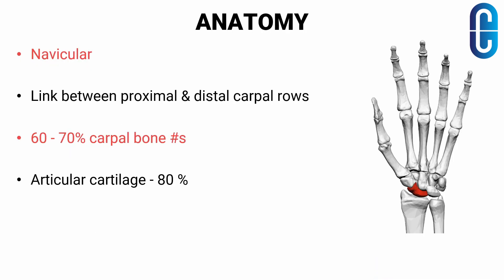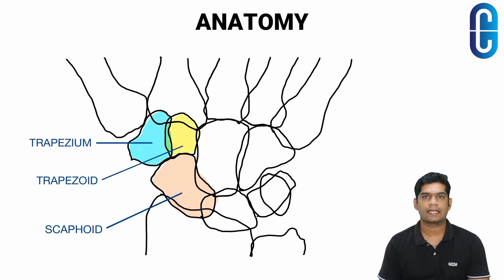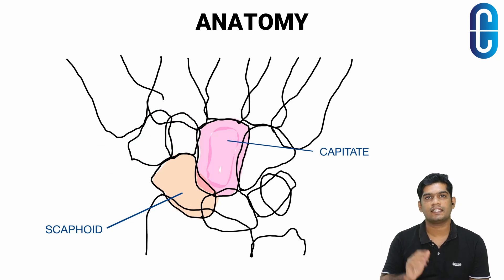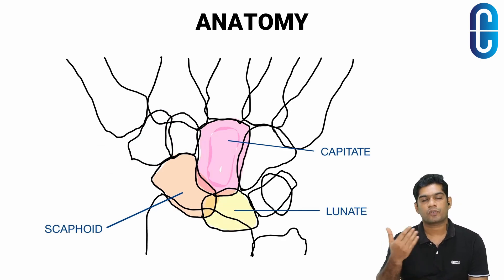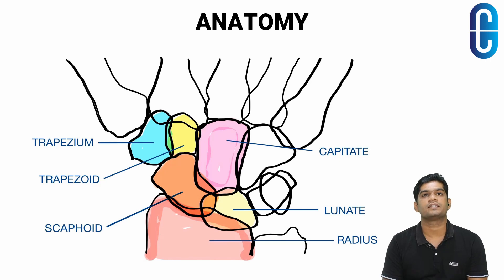Scaphoid bone is also called navicula and it forms the link between the proximal and distal carpal rows. Scaphoid fracture constitutes 60 to 70 percent of carpal bone fractures. The articular cartilage covers 80 percent of the scaphoid surface and only a narrow area of the neck or distal portion is accessible to blood vessels. Distally it articulates with the trapezium and trapezoid, on the ulnar side with the capitate and lunate, and proximally its large biconvex surface allows articulation with the radius.